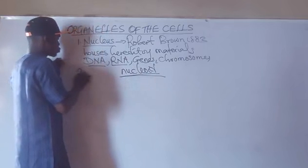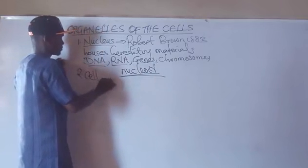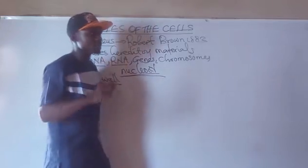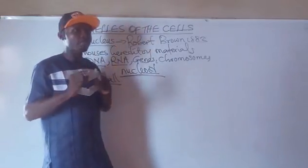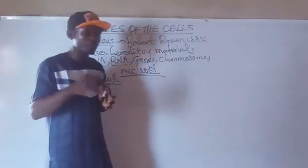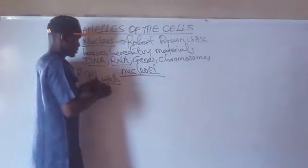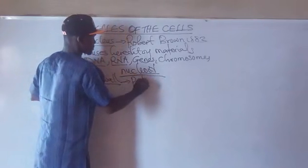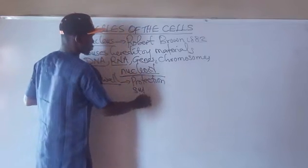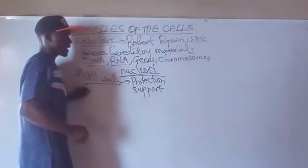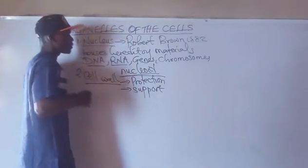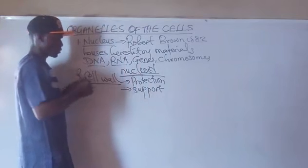Number two, we take the cell wall. The cell wall is found only in plants. Animals do not have a cell wall — animals have only a cell membrane. The cell wall provides protection as well as support, and it is also responsible for the shape of the plant cell.